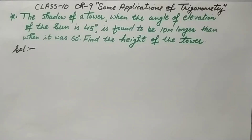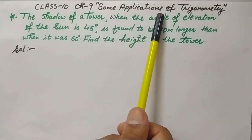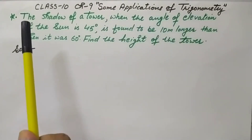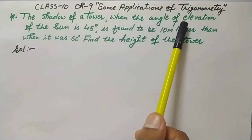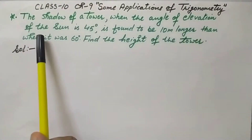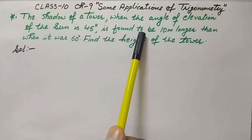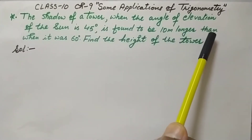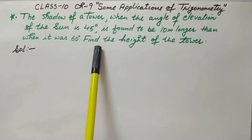Hello dear students, welcome to this YouTube channel. Let's do this question, taken from Class 10 Chapter 9, Some Applications of Trigonometry. The question is: the shadow of a tower when the angle of elevation of the sun is 45 degrees is found to be 10 meters longer than when it was 60 degrees. Find the height of the tower.